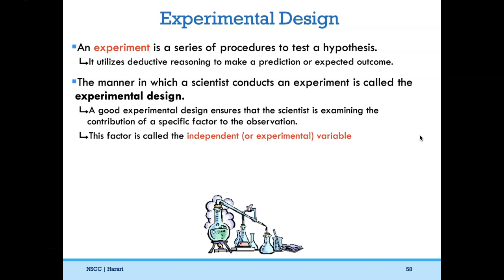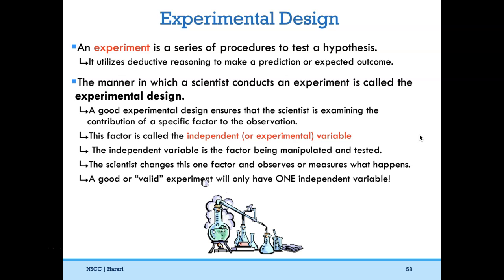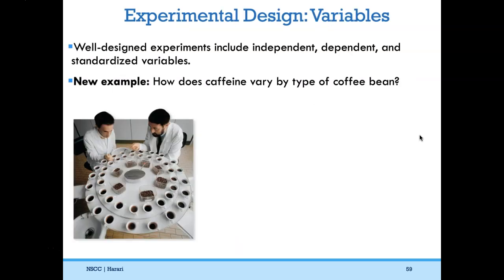The independent variable is the factor you're manipulating and testing for — the scientist changes this one variable and observes what happens as a result. A valid experiment will only have one independent variable. For example, 'what is the effect of chocolate and face washing on skin condition?' is not a good experiment — it complicates things. Well-designed experiments have independent variables, dependent variables, and standardized variables.